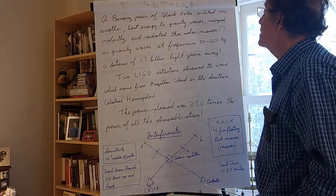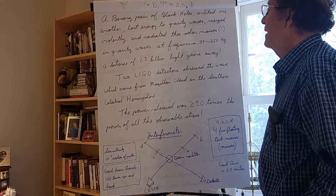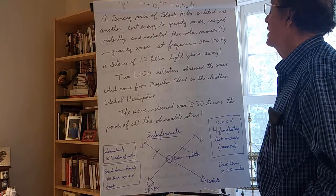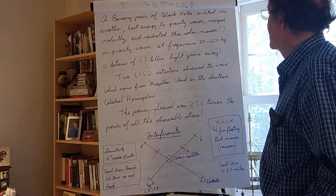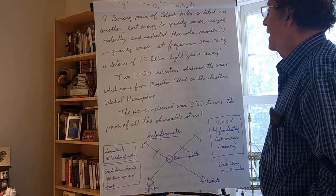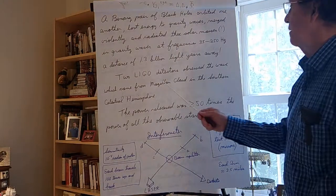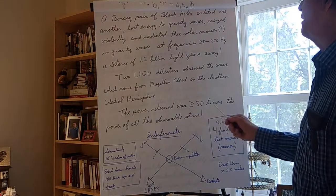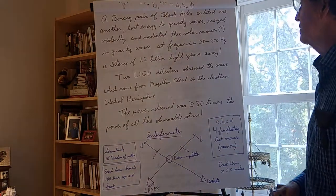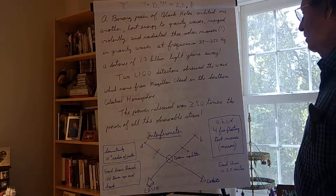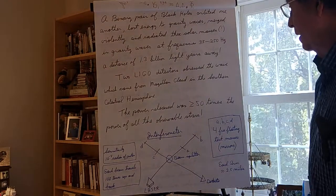The electromagnetic radiation from them lasts for a while and they get a strong spectrum and a strong signal with great detail on that front. And that supplements the gravitational wave detection. Here I say it came from the area of the Magellanic cloud in the southern celestial hemisphere. The power released was about 50 times more than the power of all observable stars.